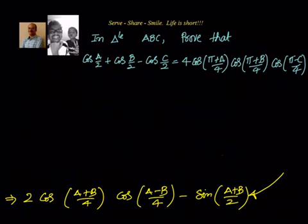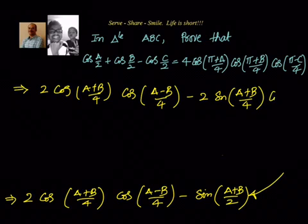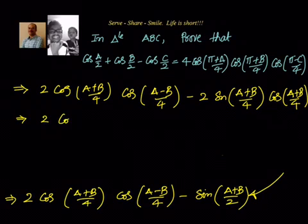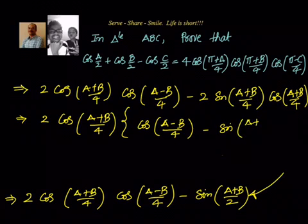Moving to the next step: 2 cos((A+B)/4) · cos((A−B)/4) minus 2 sin((A+B)/4) · cos((A+B)/4). We see that cos((A+B)/4) is common, so we take it out: 2 cos((A+B)/4) · [cos((A−B)/4) − sin((A+B)/4)].